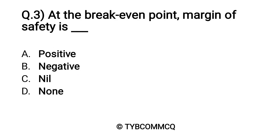Question number three: At the breakeven point, margin of safety is dash dash. Option A: positive, Option B: negative, Option C: nil, and Option D: none. Yes, Option C is the correct answer.